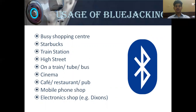Blue Jacking is used mostly in busy locations such as shopping centers, Starbucks, train stations, high streets, buses, cinemas, cafes, restaurants, pubs, mobile phone shops, and electronic shops such as Dixons.